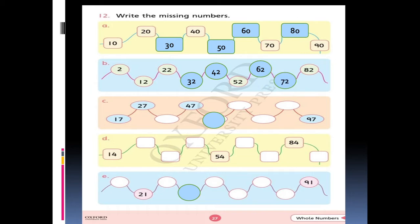Row number C. 17, 27, 37, 47, 57, 67, 77, and now 87.